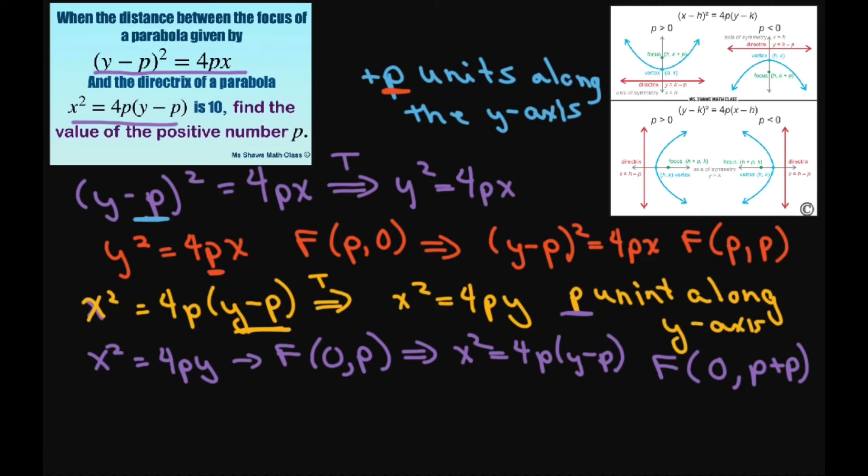Alright, from there, the directrix of this one right here is y = -p. And the directrix of this one, therefore, would be y = -p, but you have to add the p, so plus p, which equals zero. So this directrix is zero.